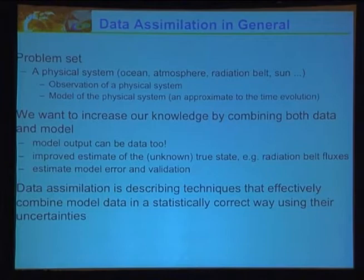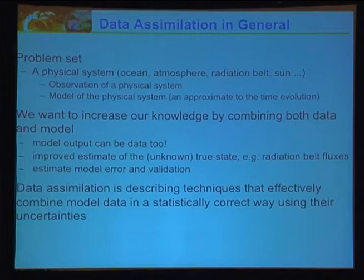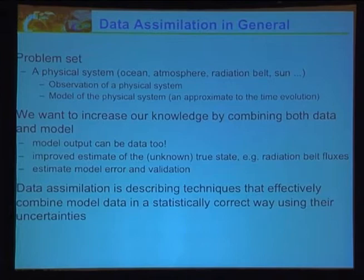Data assimilation is how to combine information from the model, observations, and relevant statistics to give an improved model state. We have a physical system — it can be ocean, atmospheric, radiation belts, sun, or even mechanical and electrical problems — and you have an observation set of the physical system. Data assimilation only improves the model state; it doesn't improve the model itself. That's a very important key issue.